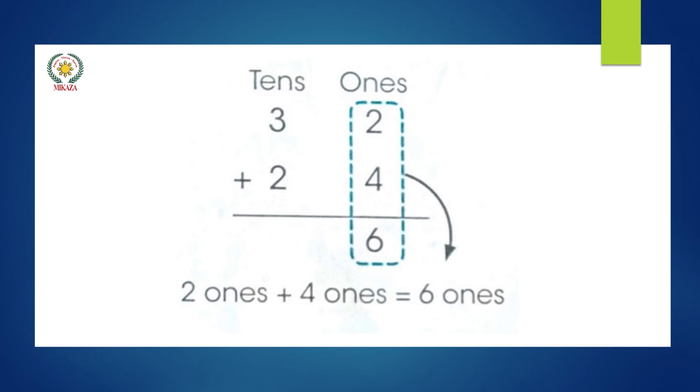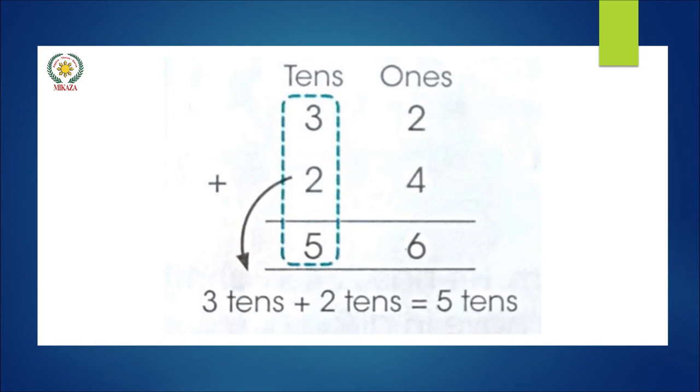Add three to two. We get the same answer for the additional part, 6. Second step, first step ones, second step tens. 3 plus 2 is 5. 32 plus 24 equals 56.